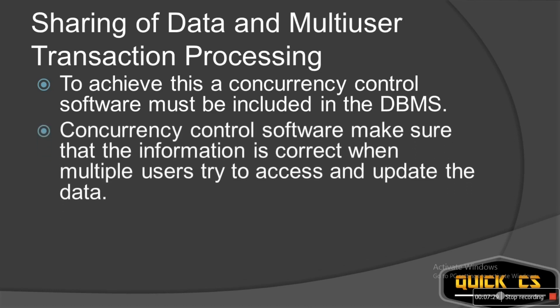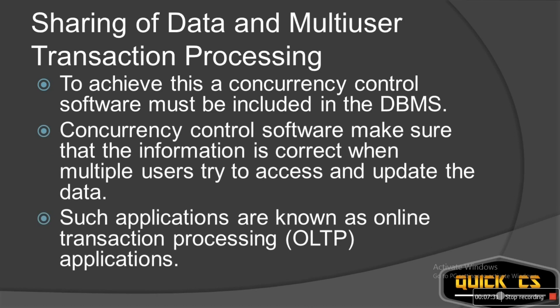Why does this concurrency control software exist? It exists so that whenever a user uses the data, it should be correct and updated. There shouldn't be confusion — like right now the data was X, after 2 seconds the data is Y — which one to choose? Hence, once a user commits the changes, then only the other person can use it. This is also known as ACID properties, which we will talk about afterwards.